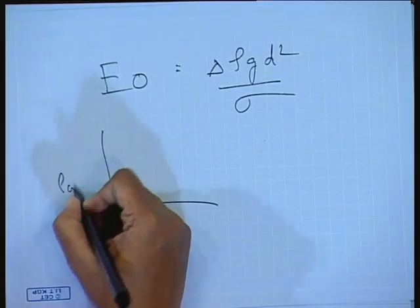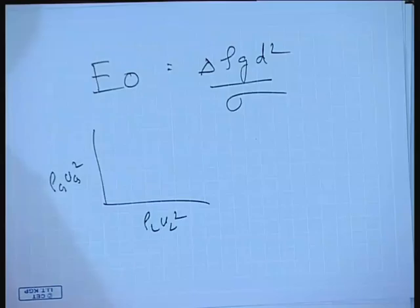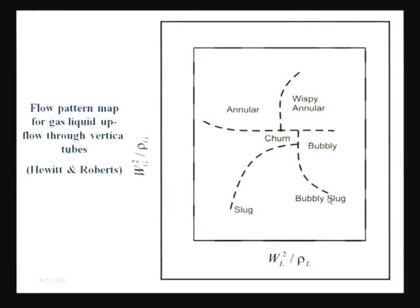The Hewitt and Roberts vertical flow map uses the superficial momentum flux of the gas as the y-axis and of the liquid as the x-axis — basically ρ_g·u_g² and ρ_l·u_l². When gas momentum flux is high and liquid momentum flux is low, you have annular; when liquid momentum flux is high and gas momentum is low, you have bubbly. The transitions are shown by dotted lines because they occur over a range of conditions, not at a single fixed curve.